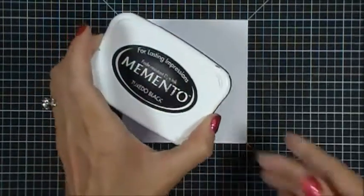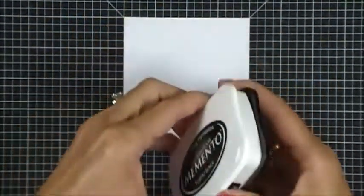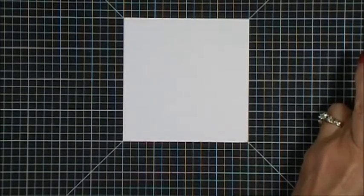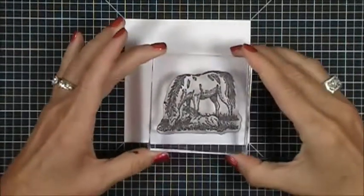I use the Memento Tuxedo Black ink. I'm going to ink up my stamp and I'm going to stamp this first.